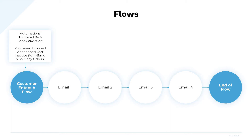For example, if you have a customer that browsed your website, they might then enter into a browse abandonment flow. This would send them an email that was a welcome to your brand, talking about who you are and what you believe in. Email two might be a collection of your most popular products and why people love them, including some reviews. Email three might be an offer for them to come back to your website and purchase, followed by that last email in the series that reminds them that the discount is about to expire. After that, they would then end the flow.